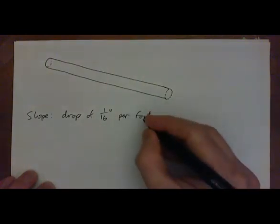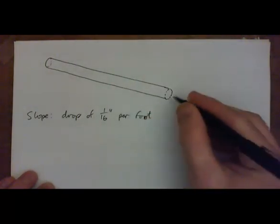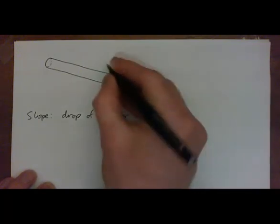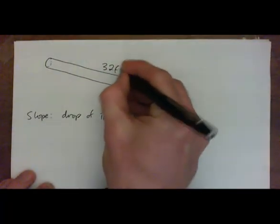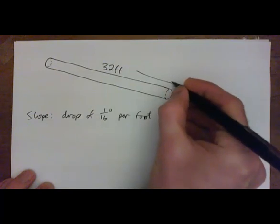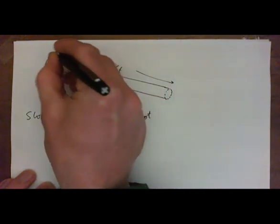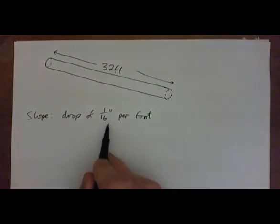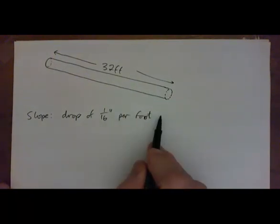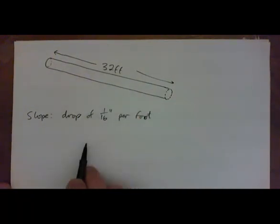So we've got our 10 inch diameter drain pipe and it's 32 feet long, and it has a recommended slope of a drop of 1/16th of an inch per foot. So for each foot it drops down 1/16th of an inch, and we've got 32 feet.